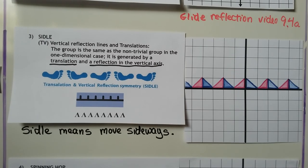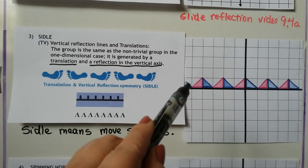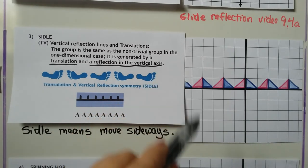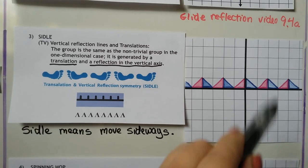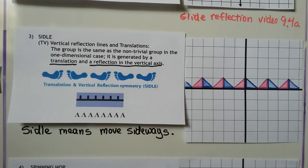Our third category is a sidle — sidle means to move sideways. We have vertical reflection lines and translations, and the group is generated by a translation and a reflection in the vertical axis. Between the red and blue figures we can see the line of reflection. The y-axis is a line of reflection here. It would be a pattern like this. That's a sidle.